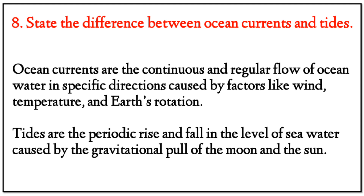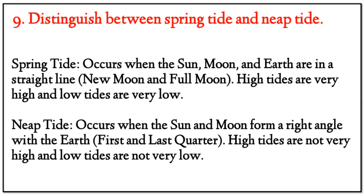Question 8: State the difference between ocean currents and tides. Answer: Ocean currents are the continuous and regular flow of ocean water in specific directions, caused by factors like wind, temperature, and the earth's rotation. Tides are the periodic rise and fall in the level of sea water caused by the gravitational pull of the moon and the sun.